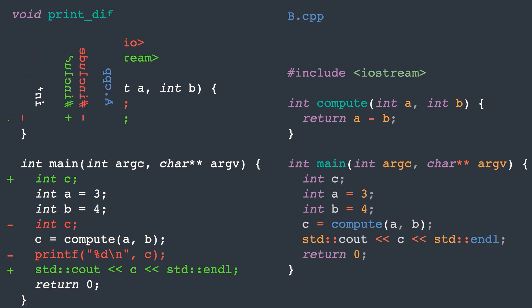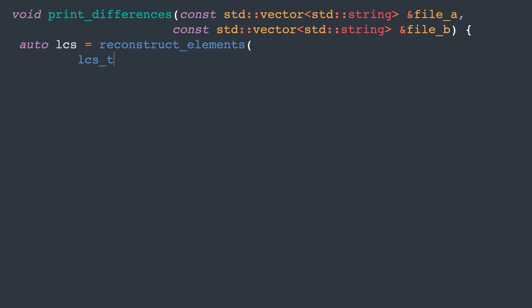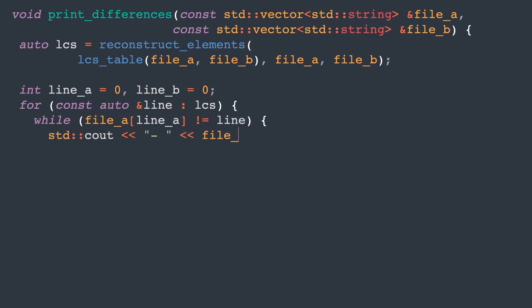Let's implement this idea. First, we find the longest common subsequence for files A and B, then we iterate over each line in the longest common subsequence and print lines from file A with minus in the front, until we reach the common line. We do the same for file B, but print lines with a plus.